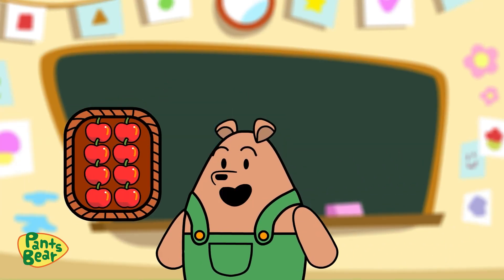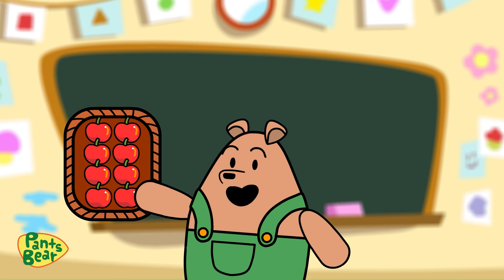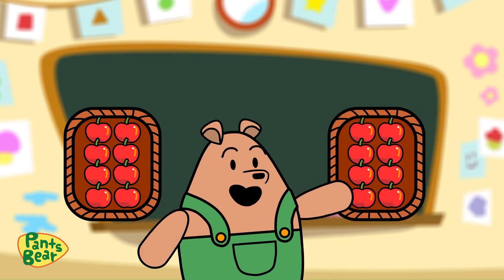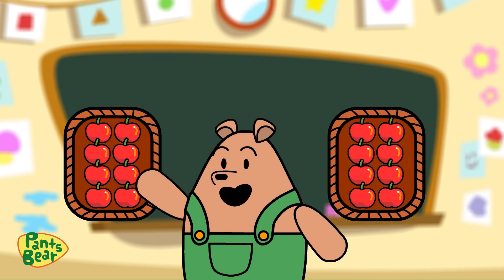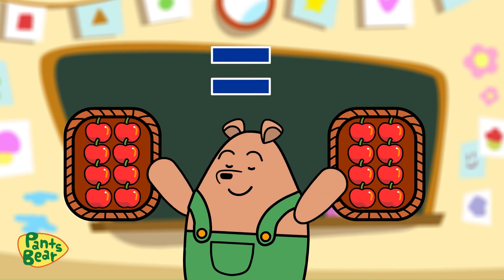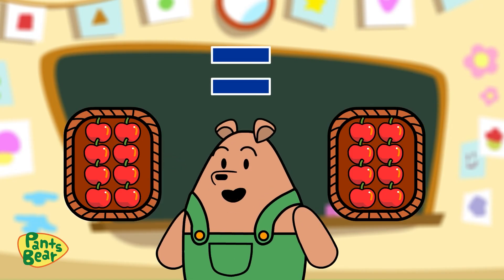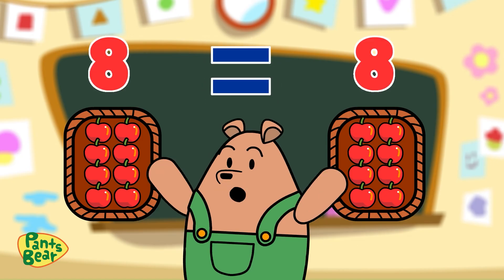Now I have eight apples in my right hand and another eight apples in my left hand. What does it mean? That's right! That means I have an equal number of apples in both hands. So we use the equal symbol. We write: eight is equal to eight.